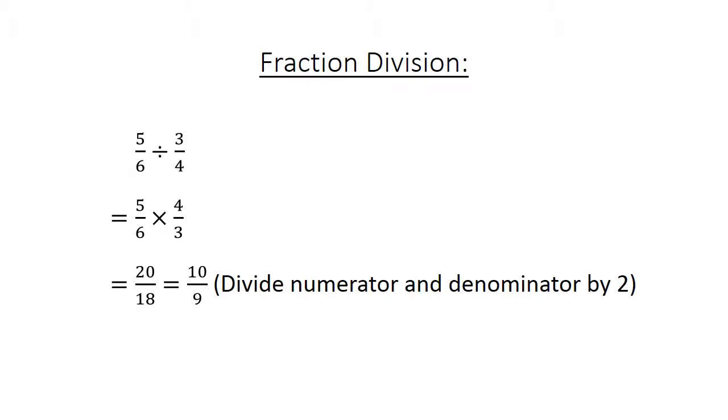Fraction division: 5 over 6 divided by 3 over 4 equals 5 over 6 times 4 over 3 equals 20 over 18. We simplify because we divide the numerator and our denominator by 2. Equals 10 over 9, equals 1 and 1 over 9.